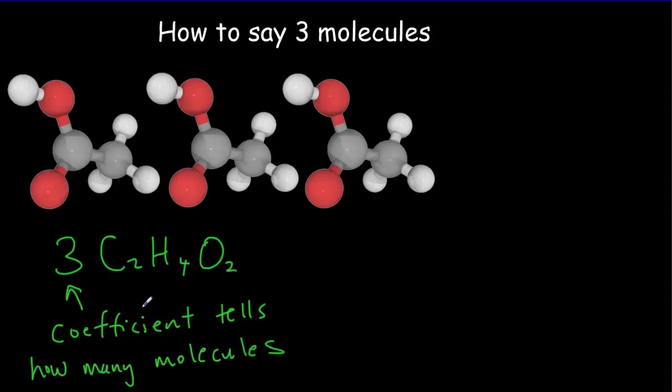So now if we want to count the atoms, we could start with carbon here, and we'd realize that there are two atoms in each molecule. But you've got three molecules. So you're going to end up with six atoms. These gray ones are the carbon, so there's one, two, three, four, five, six carbons.